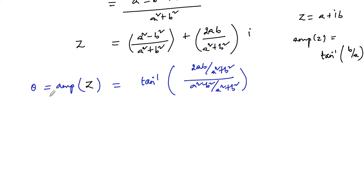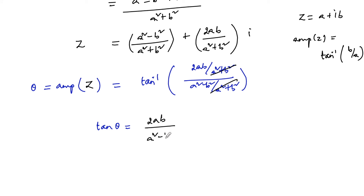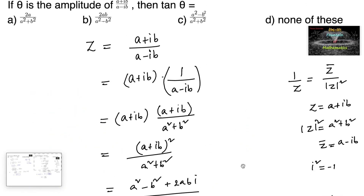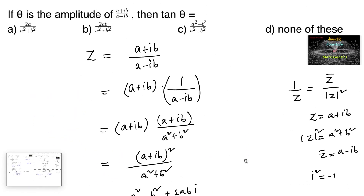Since the amplitude of the complex number is θ, we can write tanθ equals — and we can cancel (a squared plus b squared) — so we get the answer: tanθ is equal to 2ab upon a squared minus b squared. So the answer is tanθ = 2ab/(a² - b²), which is option B.